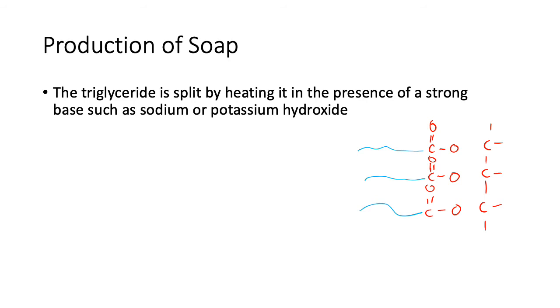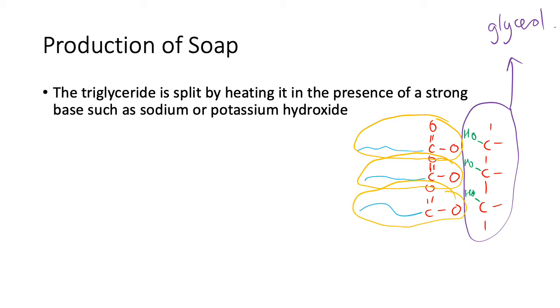Those hydroxide groups from the base form over here—they form in all three locations. This part here floats away and this is called glycerol, propane-1,2,3-triol. Then we have three soap particles present. If your triester is identical in the three long arms, they're going to produce three identical soap particles, but if they're not identical, they're going to form three different soap particles.